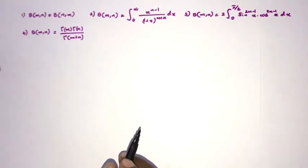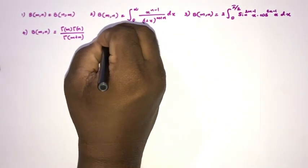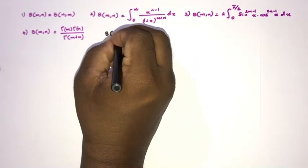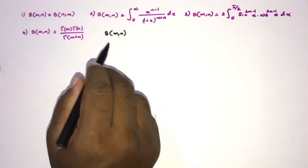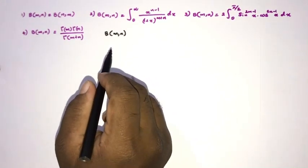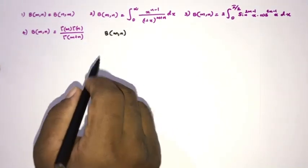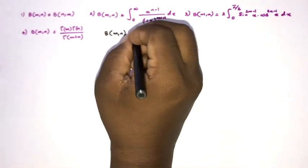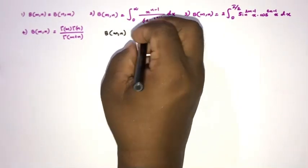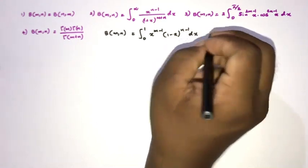Hello everyone, welcome to Mathematics. In this video we are going to talk about the Beta function and its properties. The Beta function is generally written as capital B — we use capital B because beta typically represents the Dirichlet beta function. So Beta of m, n, where m, n greater than 0, is defined by the definite integral: B(m,n) = integral from 0 to 1 of x^(m-1) times (1-x)^(n-1) dx.